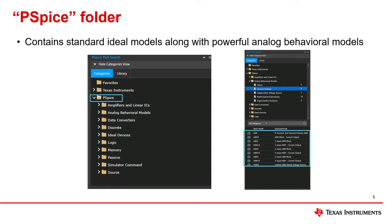The PSPICE folder contains ideal component models such as op-amp, ADC, DAC, and transmission lines, to name a few. It also contains powerful analog behavior models such as multiple input blocks and lookup tables.